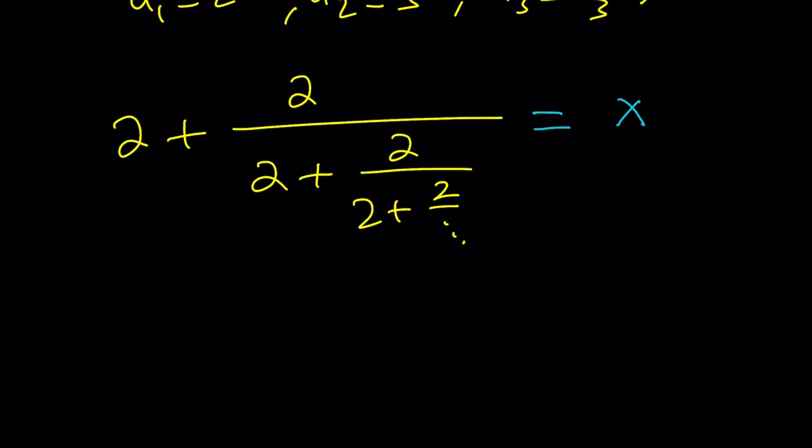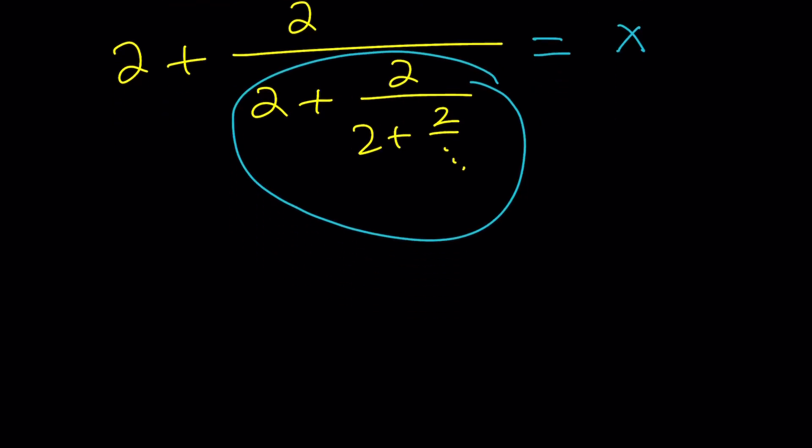Well, when you have an expression like this, notice that the whole denominator is going to look like this: 2 plus 2 over 2 plus 2 over dot dot dot. And if you compare it to the original expression,